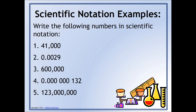In the first example, it's 41,000. There's no decimal point here, because we need a coefficient between one and ten. The only way to get a coefficient between one and ten is to put the decimal point in between the four and the one. There is an imaginary decimal point at the end, so if we move this imaginary decimal point four places to the left, our answer would be 4.1 times ten to the fourth — because we moved the decimal point four places to the left.